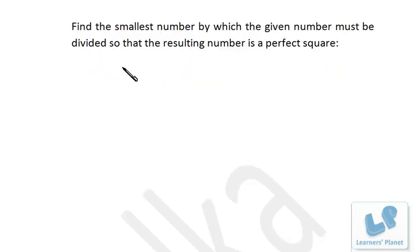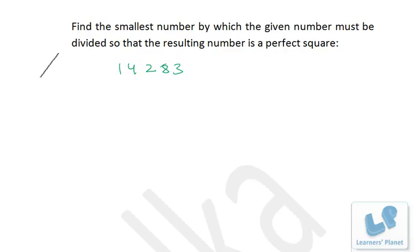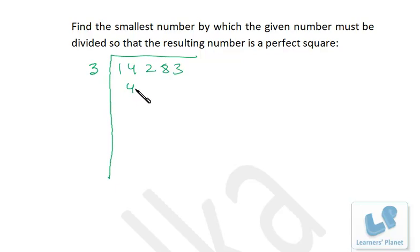I have a number 14283. I have to find the smallest number by which this number must be divided so the resulting number is a perfect square. First of all I have to go for the prime factorization of this number. It is divisible by 3.